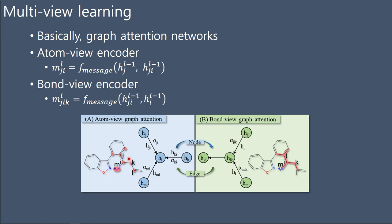Basically, the encoders use graph attention networks. The difference is that nodes and edges are interchanged between the two encoders. Through this, bond information can be added to the atom view encoder, and atom information can be added to the bond view encoder.